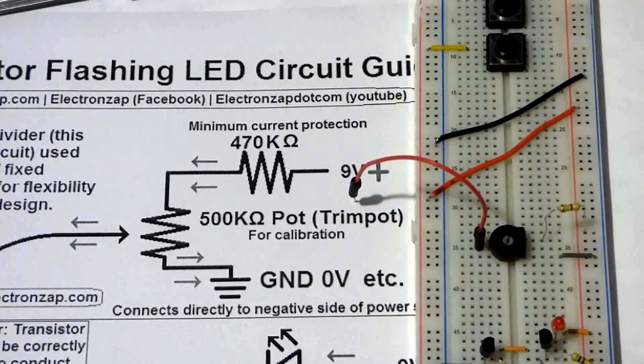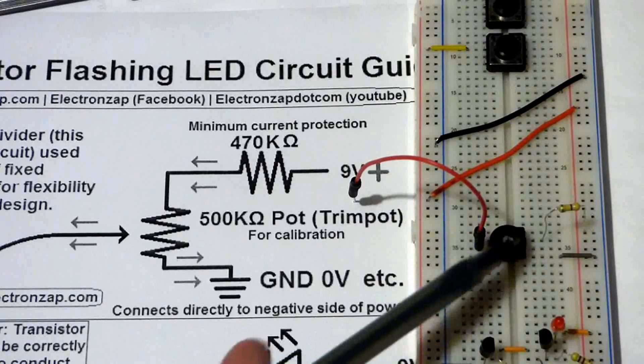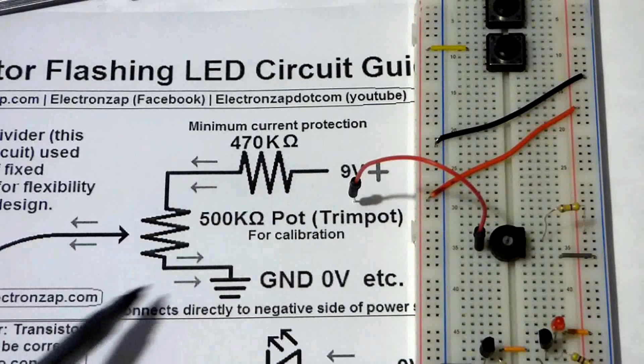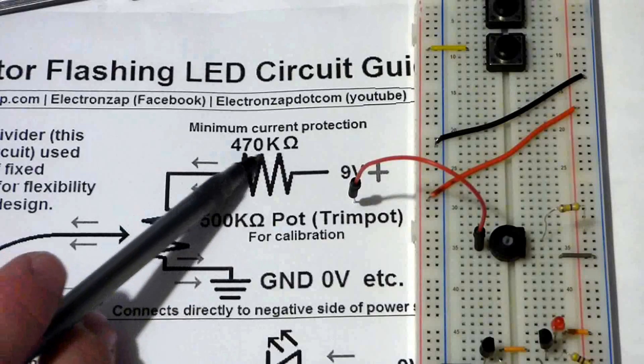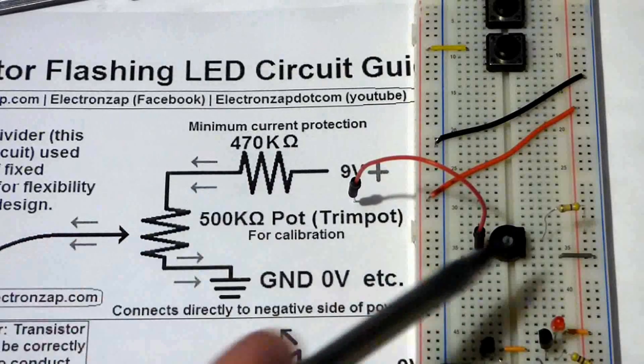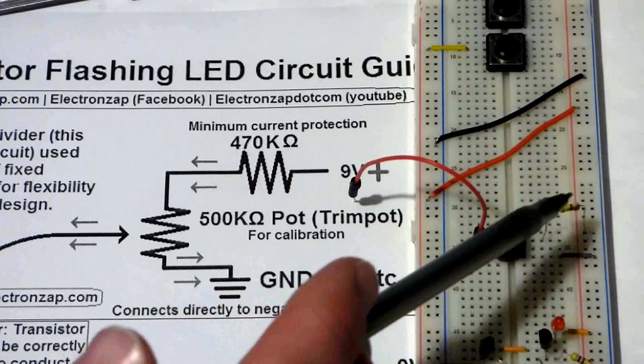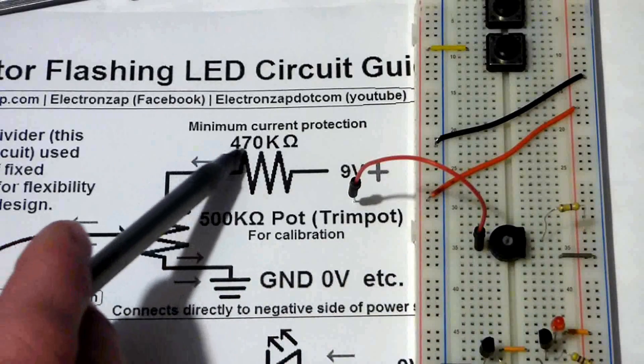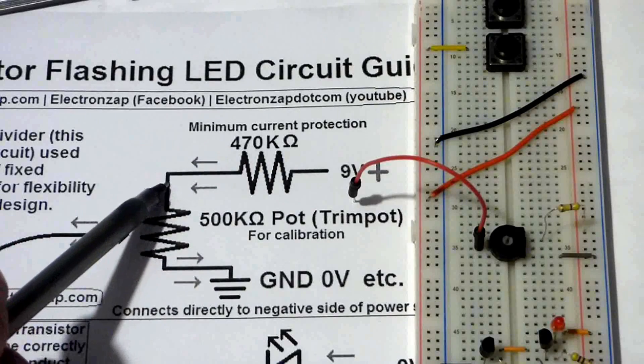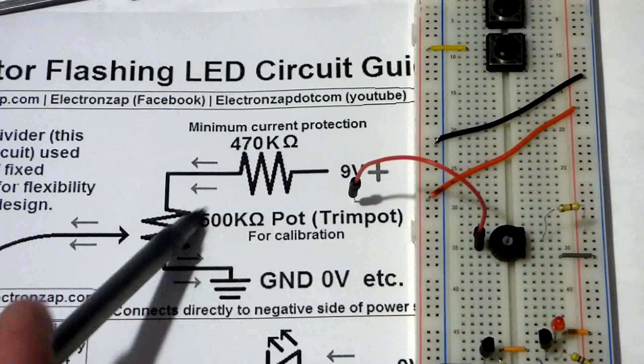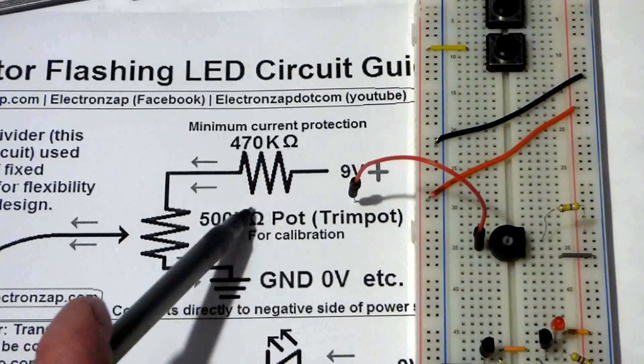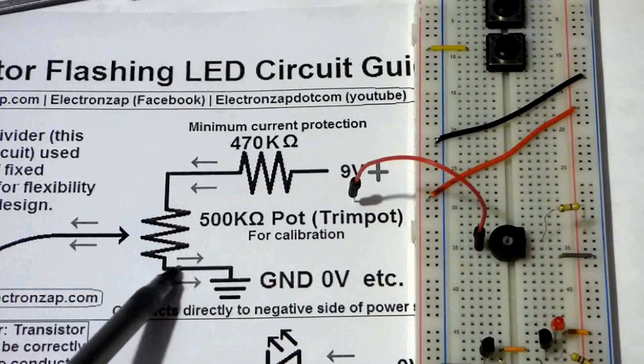To begin with, we're going to start with this voltage divider. As you can see in this schematic here, I have a 470 kilohm resistor here to protect the rest of the circuit, so this will get no less than 470 kilohm resistance that way.